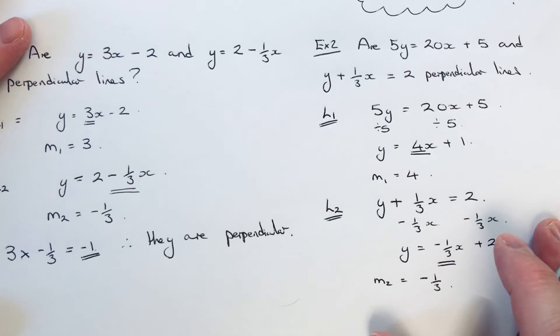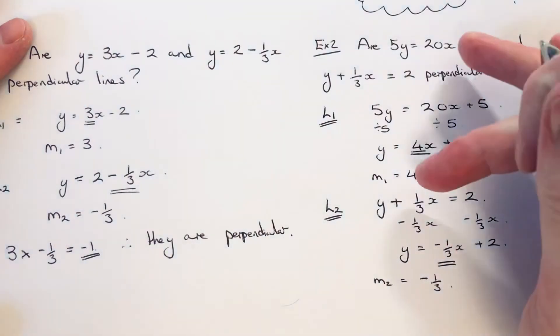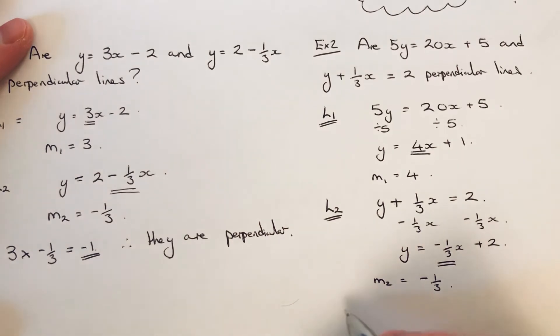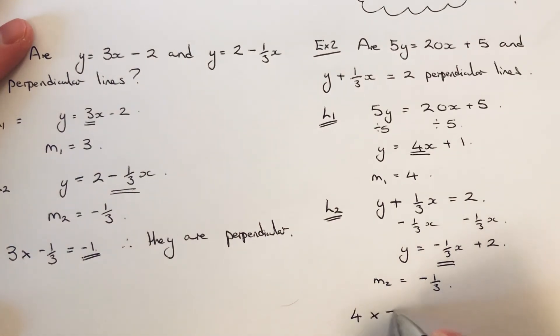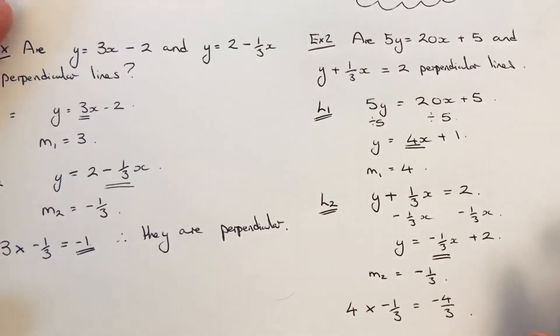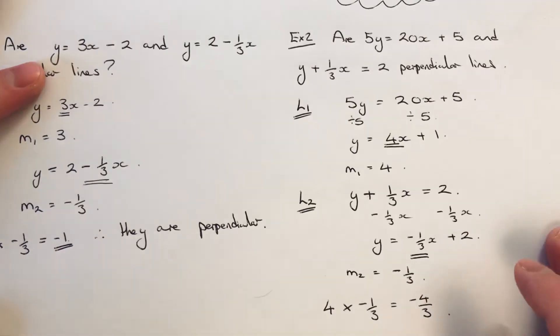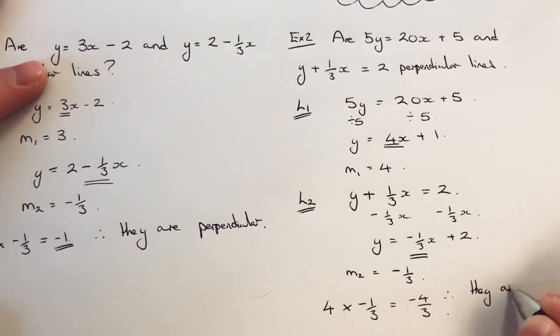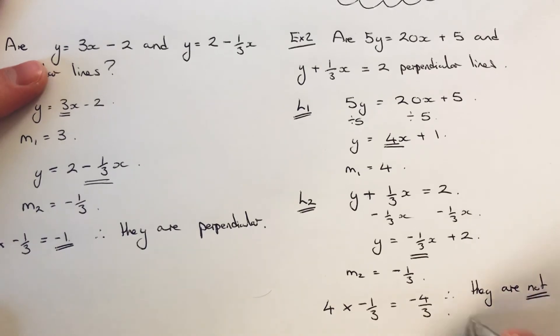So let's check... Let's just check by multiplying these two numbers together to see if it gives us minus one. So 4 times minus one third is equal to minus four thirds. So this hasn't given us minus one. So therefore, they are not perpendicular.